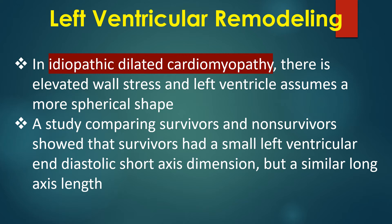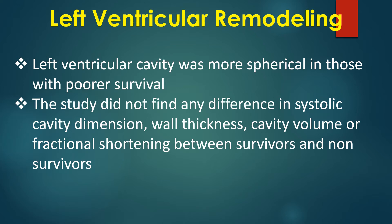A study comparing survivors and non-survivors showed that survivors had a smaller left ventricular end-diastolic short axis dimension but a similar long axis length. Left ventricular cavity was more spherical in those with poorer survival. The study did not find any difference in systolic cavity dimension, wall thickness, cavity volume, or fractional shortening between survivors and non-survivors.